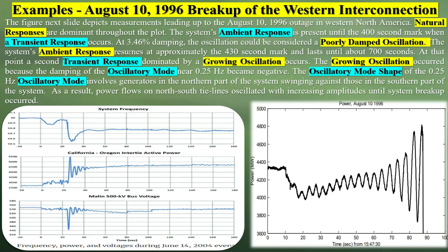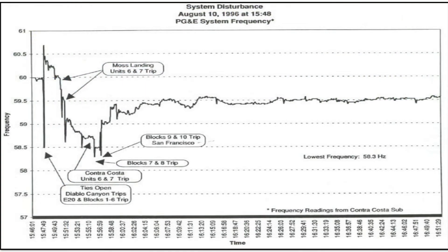Here is a summary of the August 10, 1996 breakup of the Western power interconnection. On August 10, 1996, progressive weakening of the Western interconnection led to a cascading power outage. The system broke into four disconnected islands and affected some 7.5 million customers. The blackout was an important event with major implications for the management of large power systems.